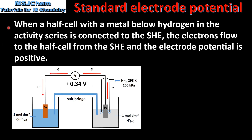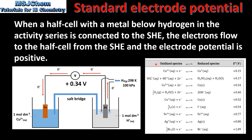When a half cell with a metal below hydrogen in the activity series is connected to the standard hydrogen electrode, the electrons flow to the half cell from the standard hydrogen electrode and the electrode potential is positive. In the example we looked at, which was a copper half cell connected to the standard hydrogen electrode, the voltage produced was positive 0.34 volts, which is the electrode potential of the copper half cell. In this table we have the standard electrode potential values of all the species below hydrogen in the activity series. As you can see they all have a positive value for the standard electrode potential.